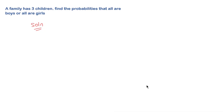Good day friends, welcome back to Smartbook Guide. In today's video we are going to be looking at this problem: a family has three children, find the probability that all are boys or all are girls.